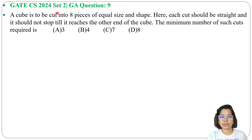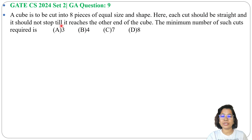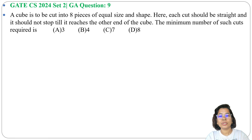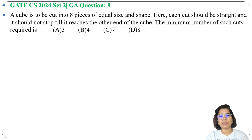A cube is to be cut into 8 pieces of equal size and shape. Each cut should be straight and should not stop till it reaches the other end of the cube. The minimum number of such cuts required is — 4 options are given. We have a cube and we need to make 8 pieces. It is asking how many cuts will give us 8 pieces of that cube having equal size and shape.